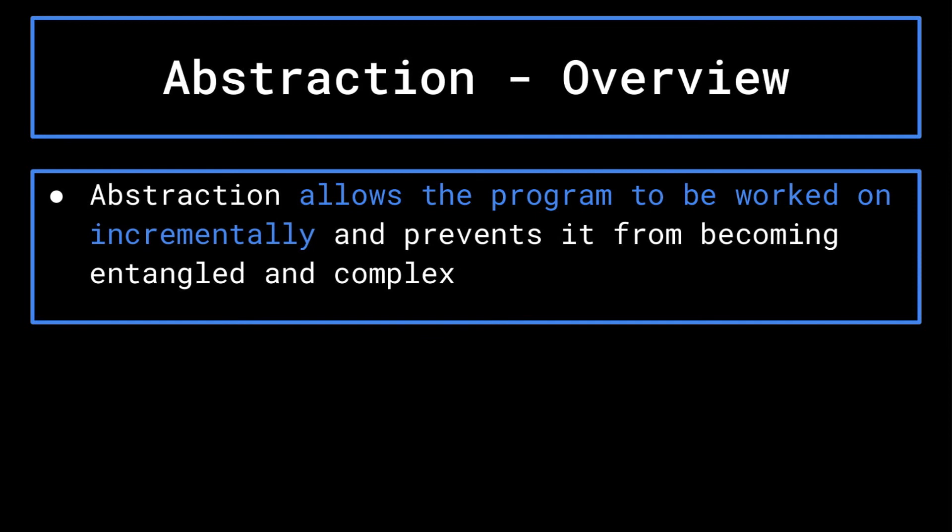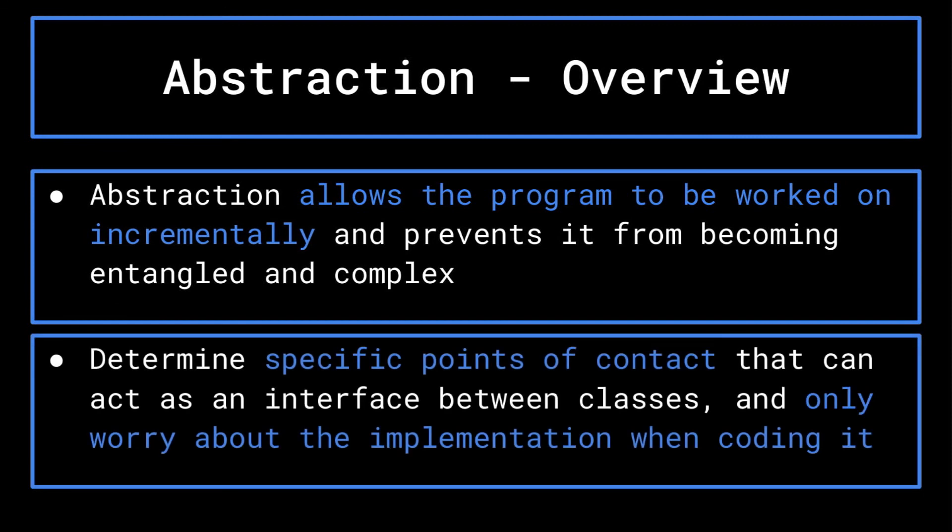Overall, it's best to keep in mind abstraction when writing object oriented code, as it allows the program to be worked on incrementally, and prevents it from becoming entangled and complex. Determine specific points of contact that can act as the interface between classes, and only worry about the implementation behind it when working on that section.